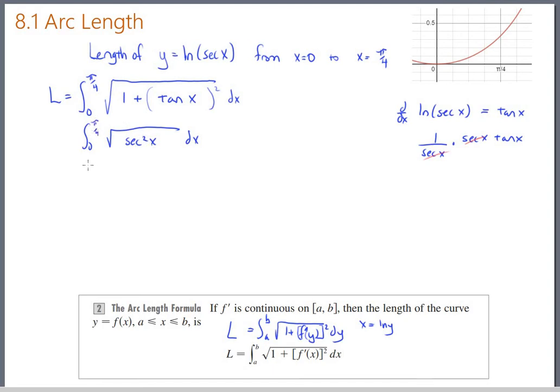Of course, the square root of secant squared is the absolute value of secant. We're going from 0 to π over 4, which are positive values, so I'll drop the absolute value. Limits of integration, 0 to π over 4.